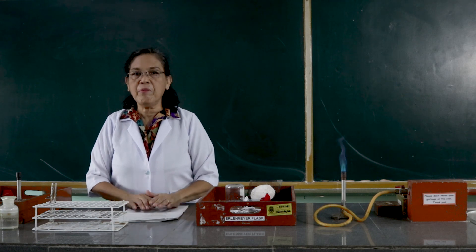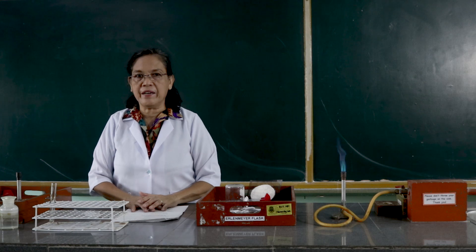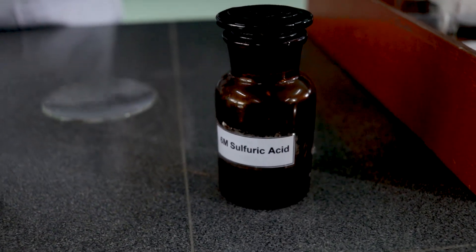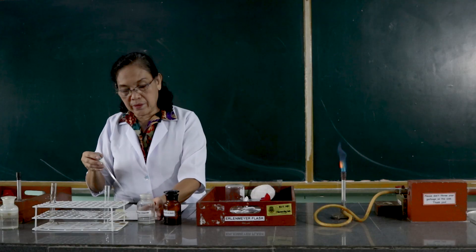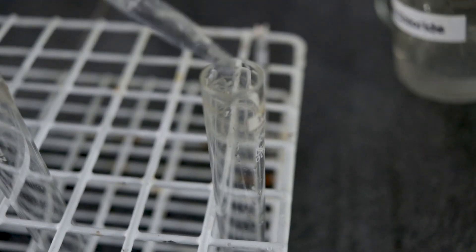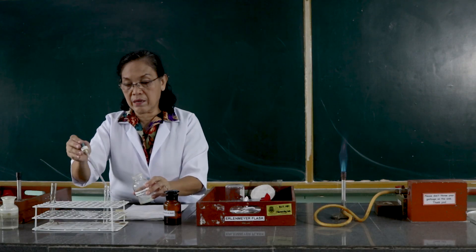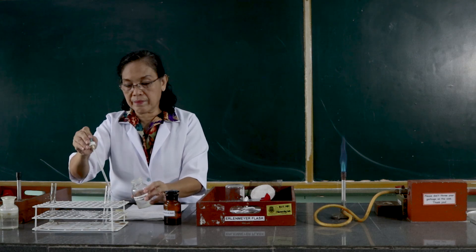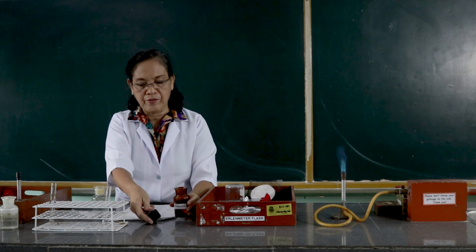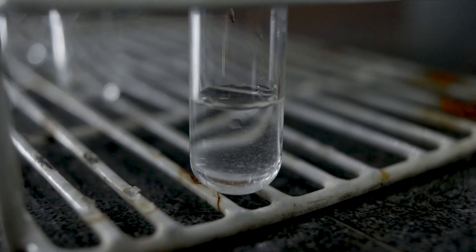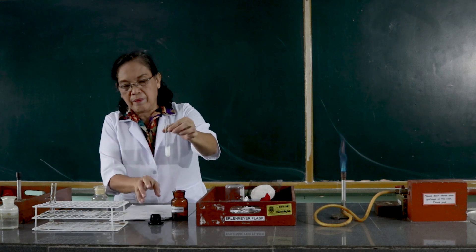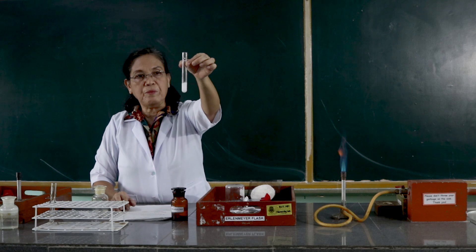We are going to exhibit the double decomposition reaction between sulfuric acid and barium chloride. We will get 3 ml of the barium chloride and add it with 3 ml of sulfuric acid. I want you to observe what happens.